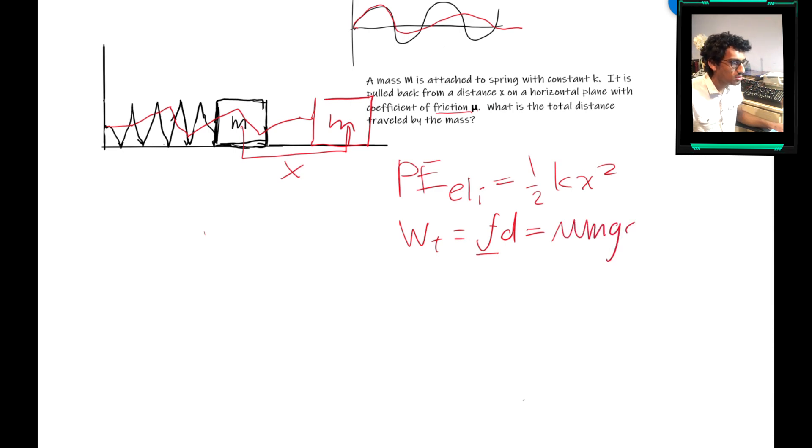So that would be equal to mu m g times d. Friction force just equals mu m g, using our given variables.